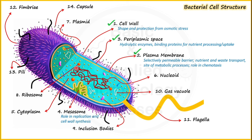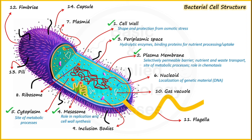Cytoplasm, where most structural components of the bacterial cell are present, is the site of metabolic processes such as glycolysis and the Krebs cycle involved in energy generation — these operate inside the cytoplasm. Now regarding the nucleoid: this term represents the localization of genetic material. The DNA in the bacterial cell is not enclosed in any membranous envelope, which is why bacteria are classified as prokaryotic cells — lacking a true nucleus.